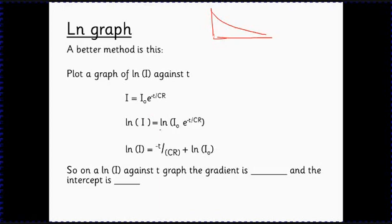If we take logs of both sides then we end up with log I equals minus t over CR times the log of I naught. There's a little log rule in here for you - I've taken the logs of both sides, but the log of a times b is the log of a plus the log of b, so I've split this up here into the log of a plus the log of b.